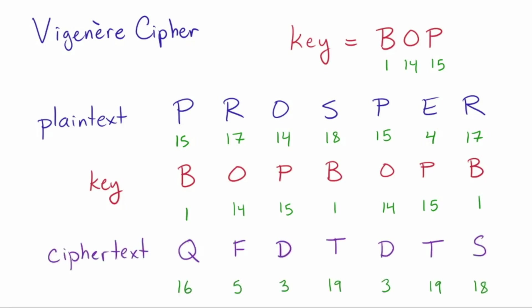Here's the cipher text. For example, at the first column, I take 15 plus 1 to get 16 for the cipher text. In the next column, I shift 17 by 14 to get 31. But remember, we wrap around the alphabet, so 31 is actually the same thing as 5. I can just subtract 26 from 31, because going around 26 notches doesn't change the letter. So it's just the remaining 5 notches that matter — that's working modulo 26.